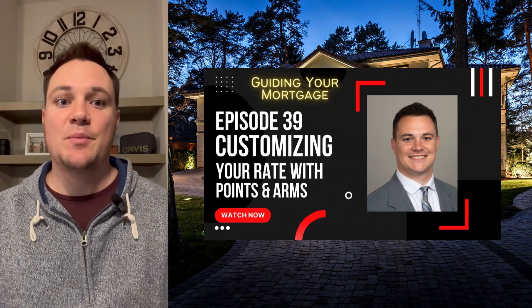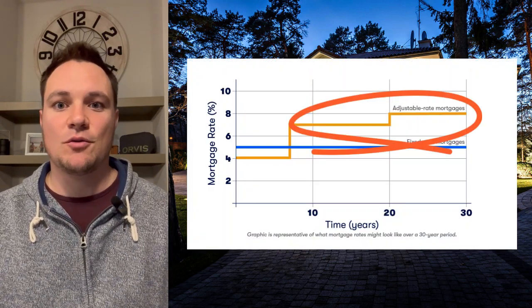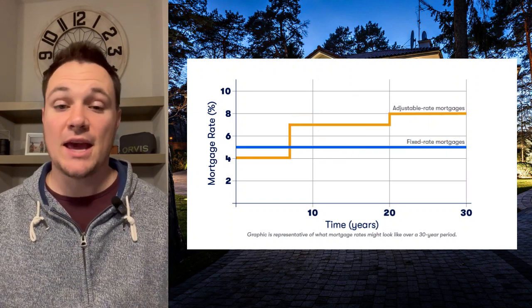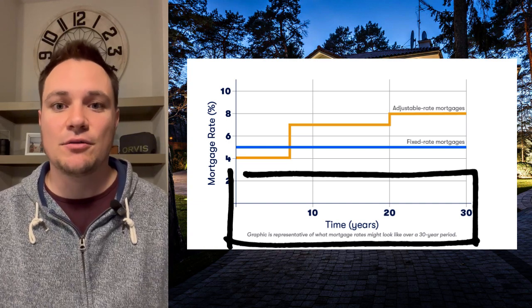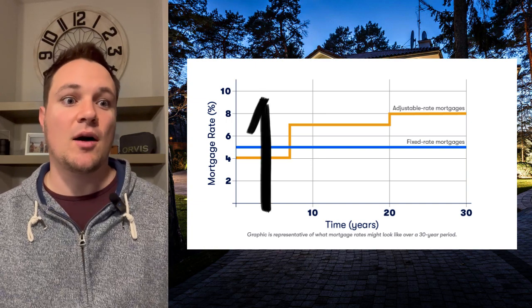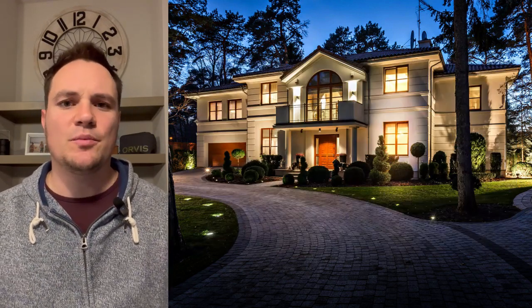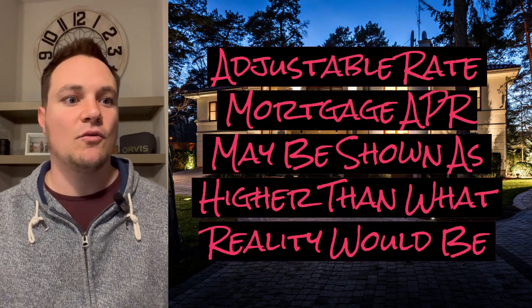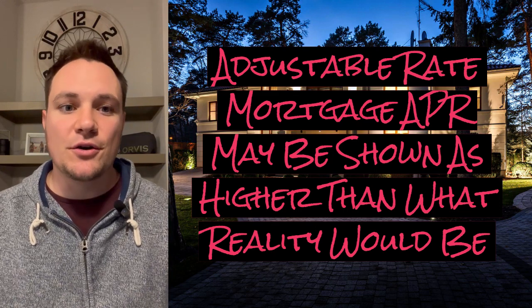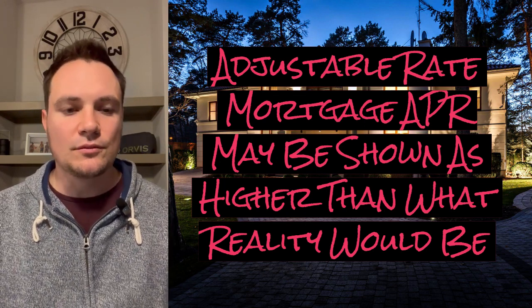If you're getting an ARM — adjustable rate mortgage — the APR is going to be artificially high. The interest rate can go back up after the initial 5, 7, or 10-year period where the rate starts low. The APR calculation is conservative: it assumes you'll be in the loan for the full 30 years past the introductory low-rate period, and that the rate will go much higher. This is calculated high even though you'd very likely plan to get out of the mortgage before that 5, 7, or 10-year period. So the actual cost of the ARM during that introductory period is much lower than what the 30-year loan would cost, since it has a lower interest rate. It's a little misleading in that sense.